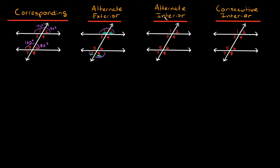Now what are alternate interior angles? Well, we're talking about the inside of your sandwich — in between your parallel lines. So the interior angles are three, four, five, and six, and again on alternate sides of this transversal. So three and six are alternate interior angles, and four and five are also alternate interior angles. If your two lines are parallel, then these are congruent — so three and six are congruent, and four and five are congruent.